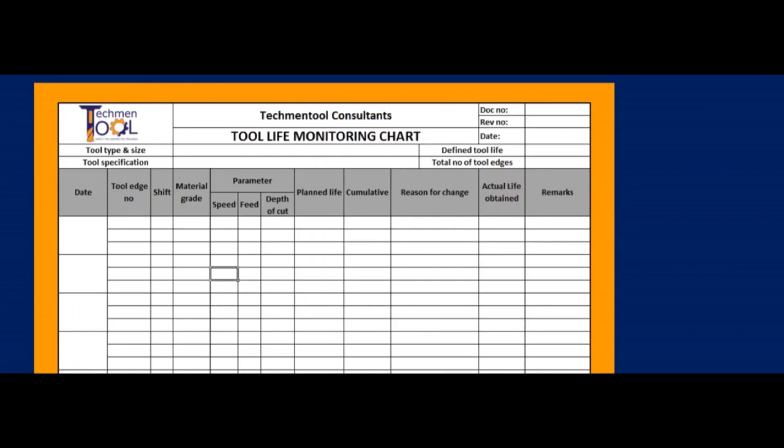The tool monitoring chart consists of information about date, tool age number, shift, material grade, parameter details, planned life of the tool, and achieved life of the tool.